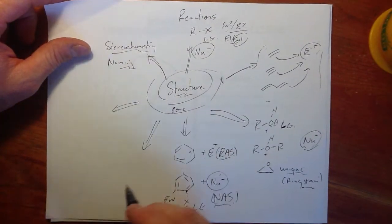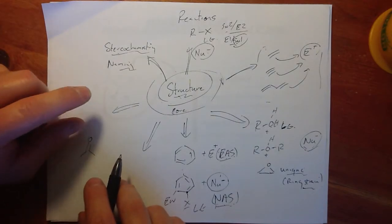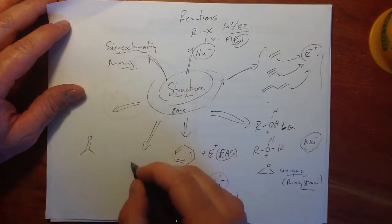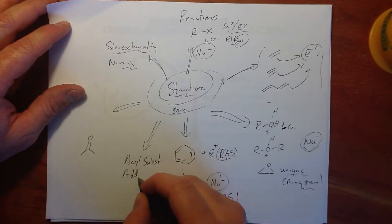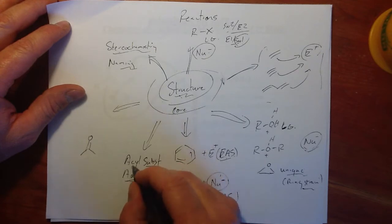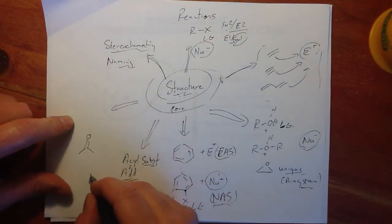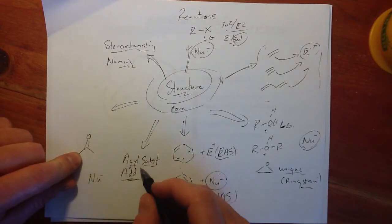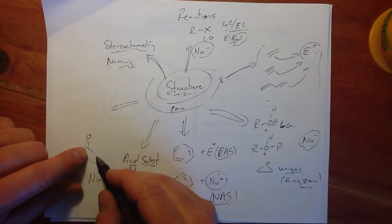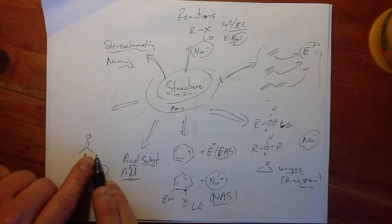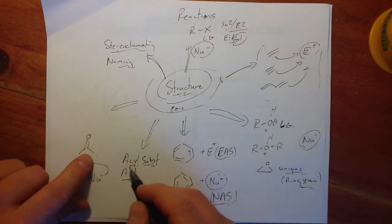Now we're nearing the end of OChem 2, and I'm going to divide our discussion of carbonyls into two camps. This picks up where we were at the beginning of our discussion of acyl substitution and acyl addition. In these two cases, the carbonyl is the focus, and the nucleophile at some point attacks this carbon — either with acyl substitution where we have a leaving group, or with addition, just alkyl groups and hydrogens at those two positions off the carbonyl.